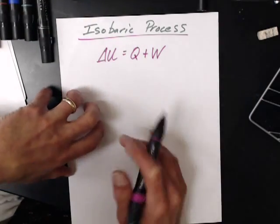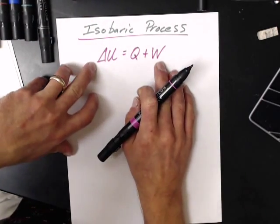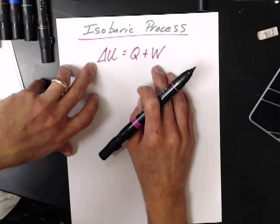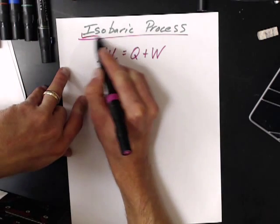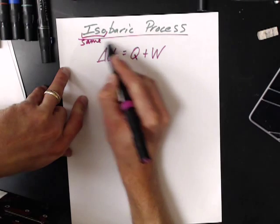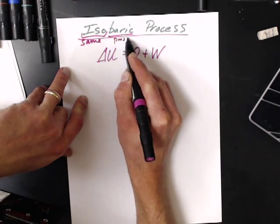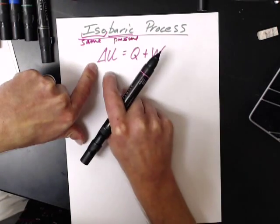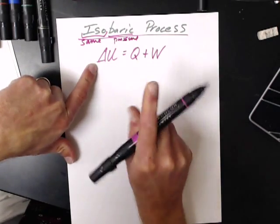One of the first situations we look at in situations of the first law is in an isobaric process. Iso means same and baric means pressure. But if we look at the first law, there's no pressure here, this is just the internal energy. We've got some heat and we've got some work.